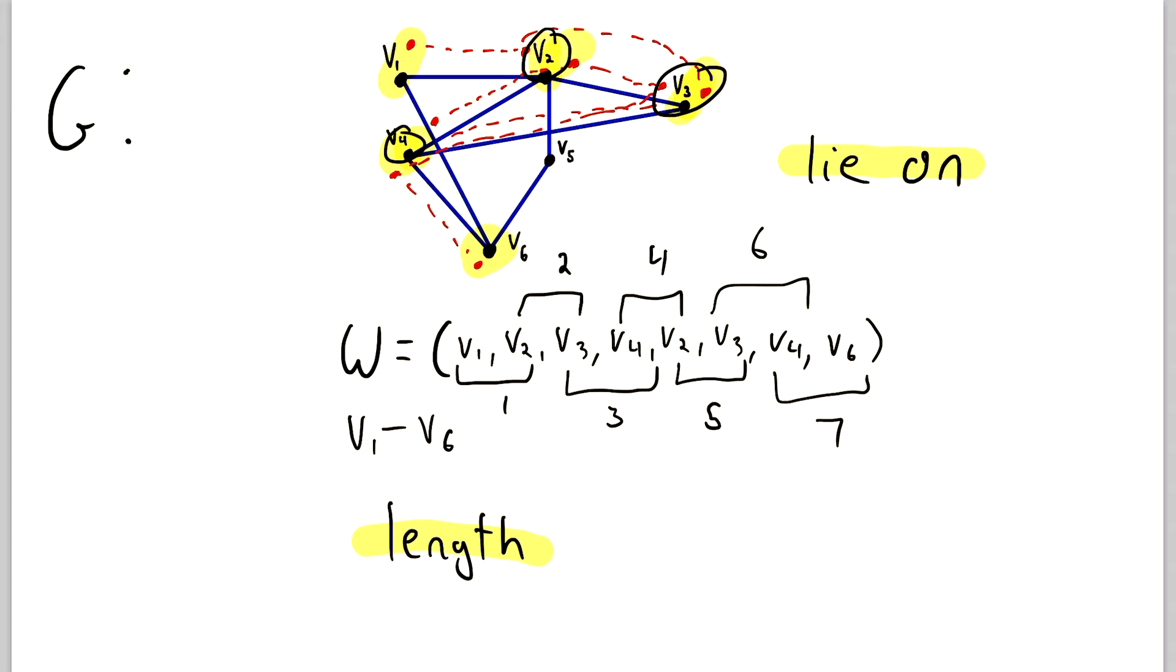By that, I mean it doesn't matter if the edges are distinct or not. They still count towards the length of the walk. So if you just went from V1 to V2 back to V1, and then back to V2, and did that a million times, the length of that walk would be 1 million.